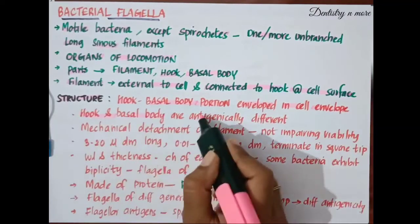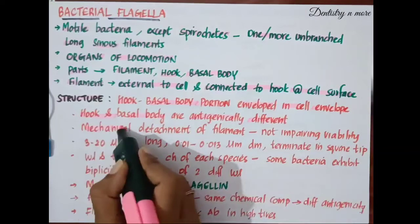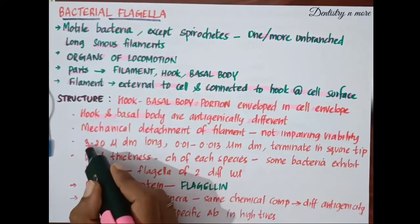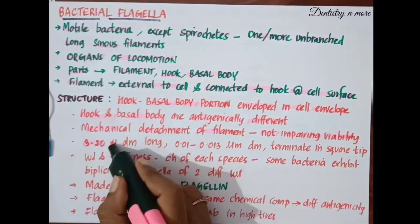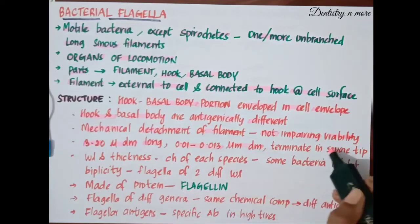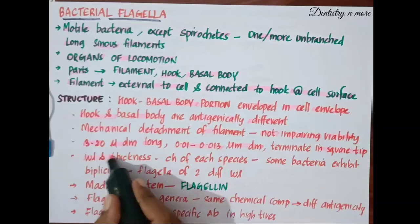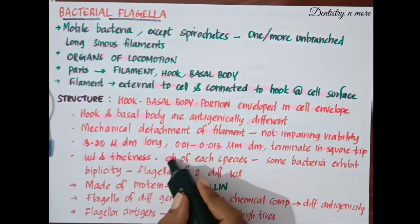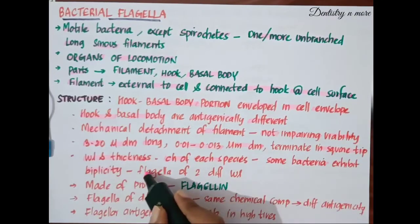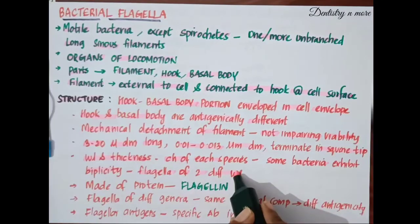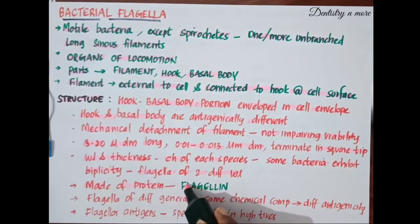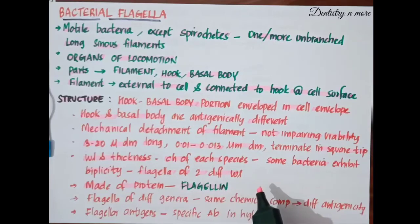The hook and basal body are antigenically different. Mechanical detachment of the filament does not impair the viability of bacteria. Usually the bacterial flagella is 3 to 20 micrometers in length and 0.01 to 0.013 micrometers in diameter, and it terminates in a square tip. The wavelength and thickness are characteristics of each species, but some bacteria exhibit bipolarity — that is, flagella of two different wavelengths present within the same bacterium. Bacterial flagella are made of protein called flagellin, which is very similar to keratin or myosin.